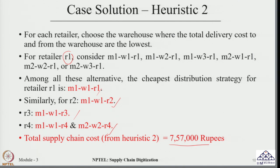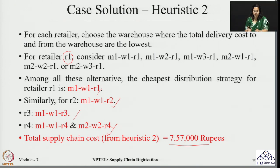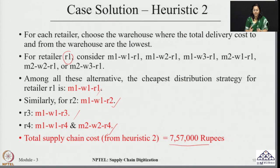Comparing the two heuristics: Heuristic 1 gave a cost of 9,61,000, while Heuristic 2 reduced this to 7,57,000. By following better heuristic approaches, cost is reducing. The question now is whether there exists an even better way to solve this problem. An Excel sheet demonstrating all Heuristic 2 calculations is also provided with this session.